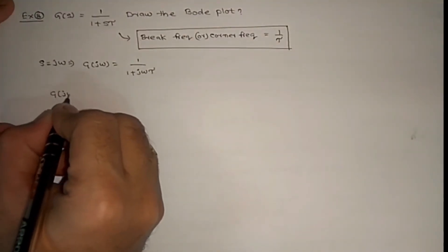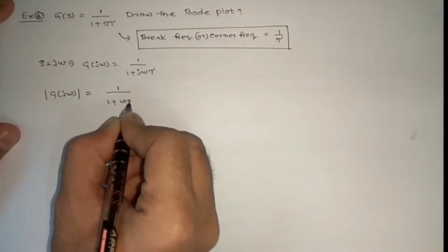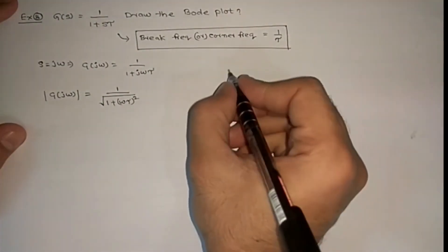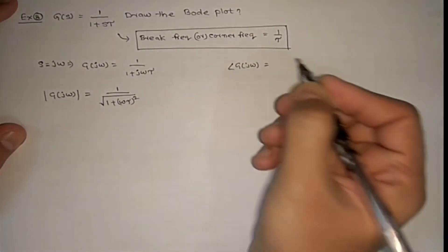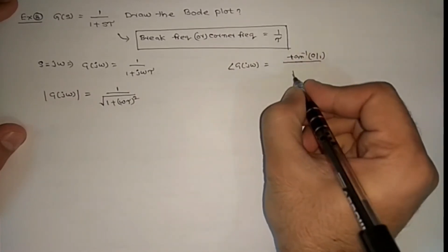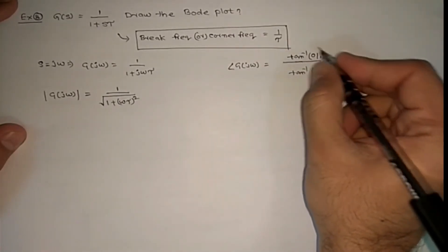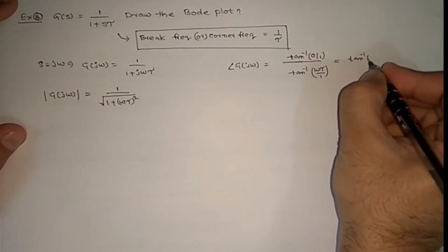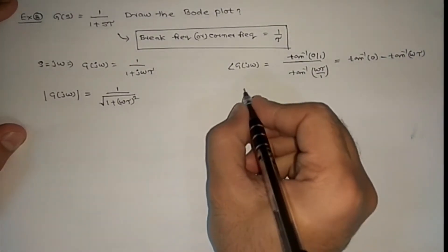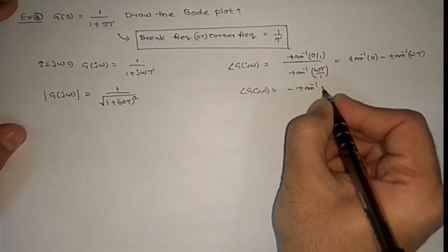The magnitude of G(jω) equals 1 divided by the square root of (1 + (ωτ)²). The angle of G(jω) equals tan⁻¹(0/1) minus tan⁻¹(ωτ/1), which gives 0 minus tan⁻¹(ωτ), so the angle of G(jω) equals minus tan⁻¹(ωτ).